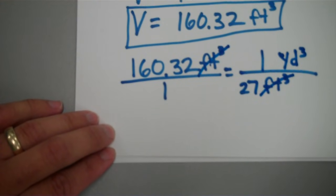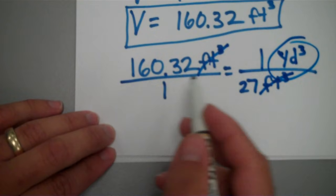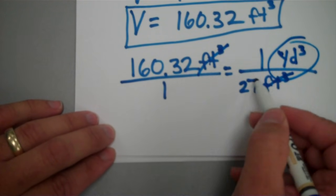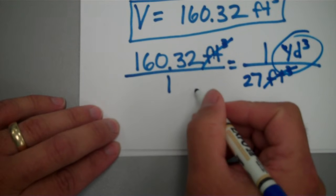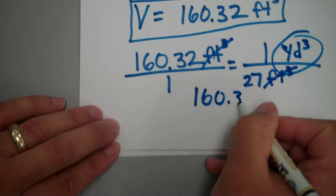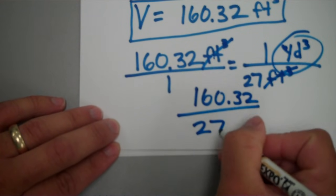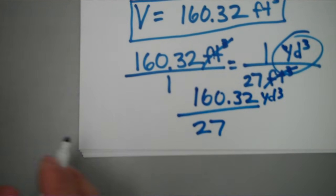When that happens, the only unit left is yards cubed. So you take 160.32 and you divide it by 27, divided by 27. And then up here at the top would be yards cubed.